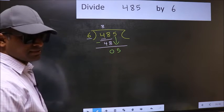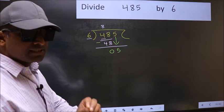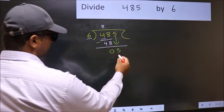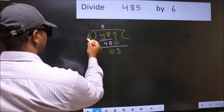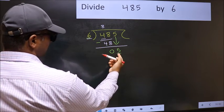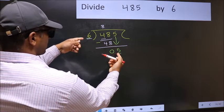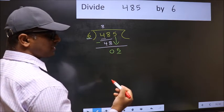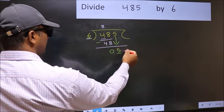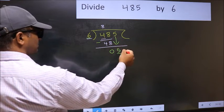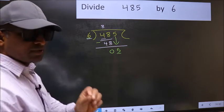After this step, the mistake happens. And the mistake is this: here we have 5 and here 6. 5 is smaller than 6. So what many do is they directly put a decimal point and take 0. Which is wrong.